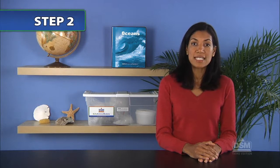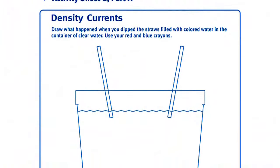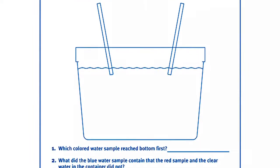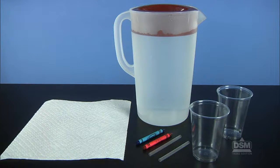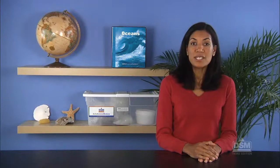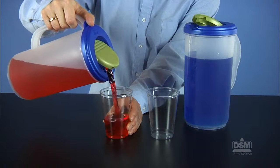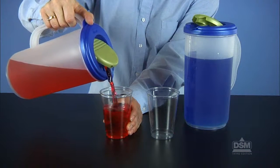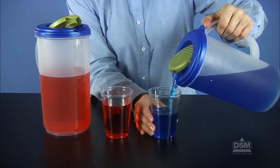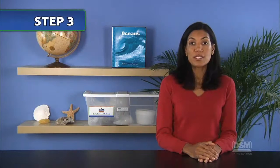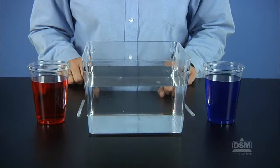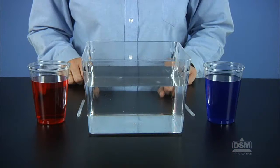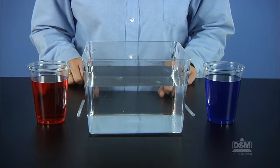Divide the class into teams of 4 and distribute Activity Sheet 8, Part A, and the materials. Help teams fill each of their two cups two-thirds full — one with red fresh water, the other with blue salt water. Then place one cup of colored water on each side of the plastic container of clear water.